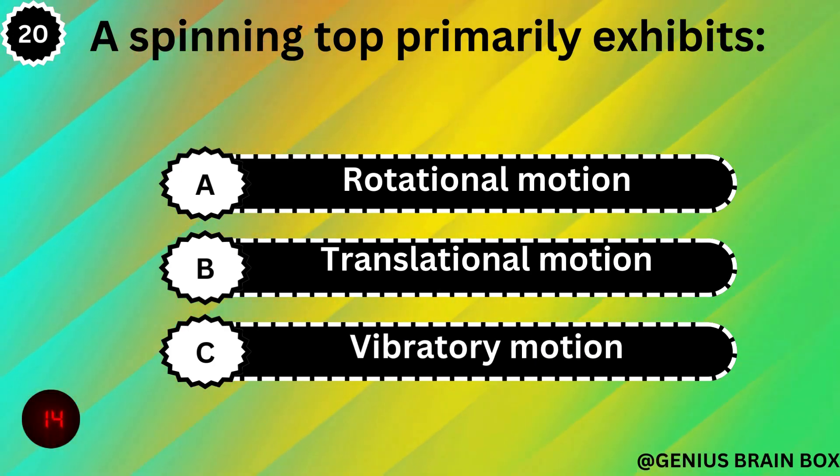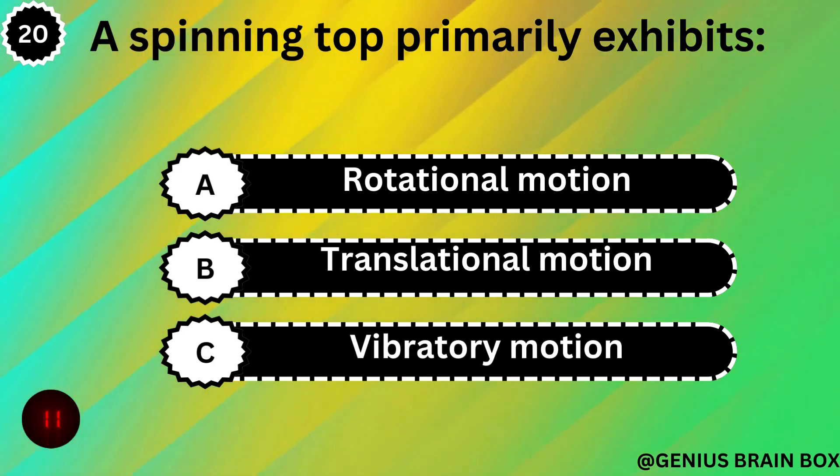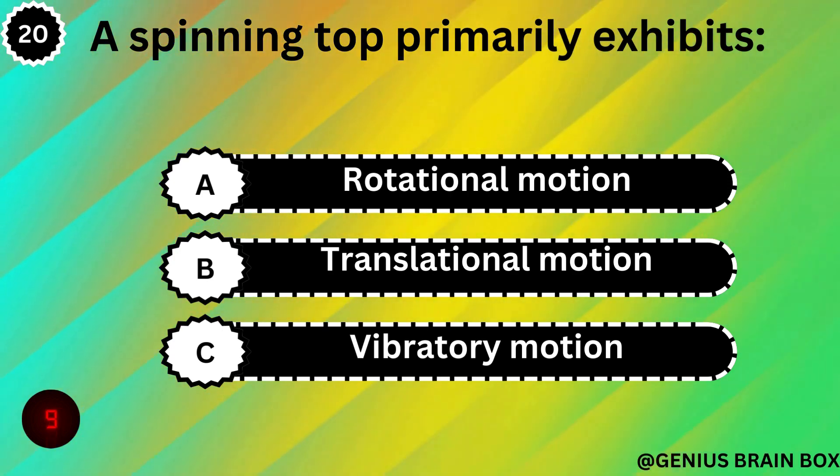A spinning top primarily exhibits: rotational motion, translational motion, or vibratory motion.